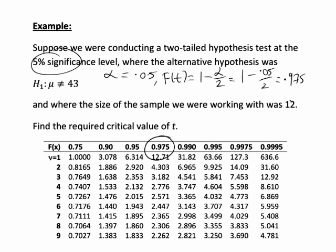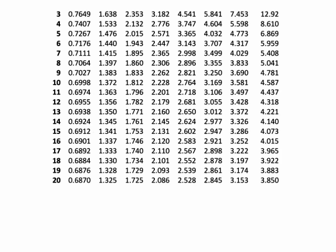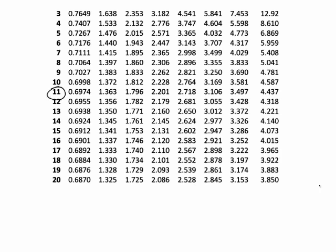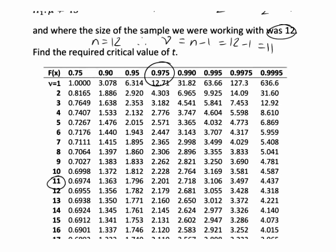The next thing we saw was that the sample size was 12. So n equals 12, therefore the degrees of freedom is always n minus 1. So that's going to be 11. In this case then, we're going to be looking at the row for 11 degrees of freedom.